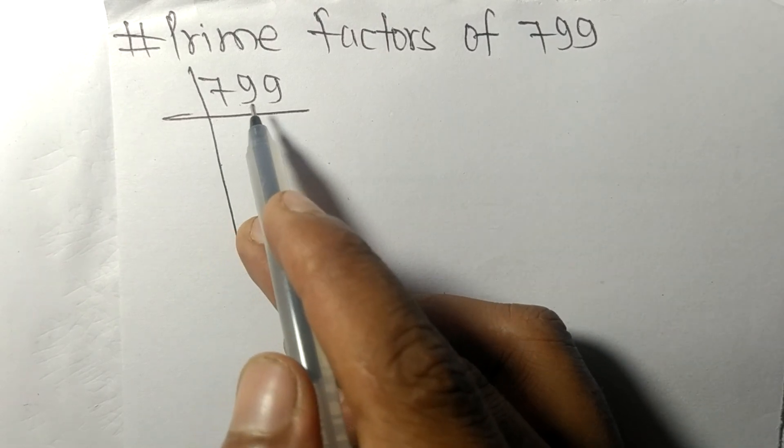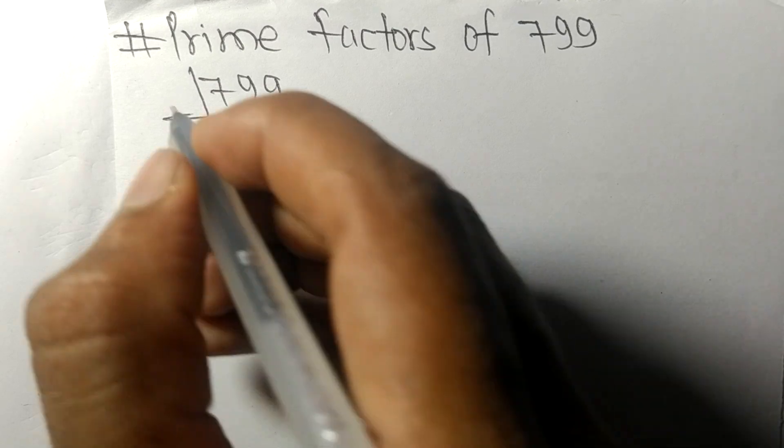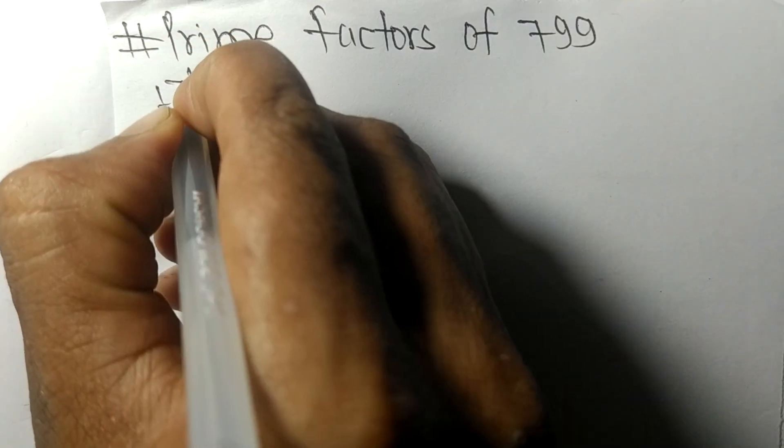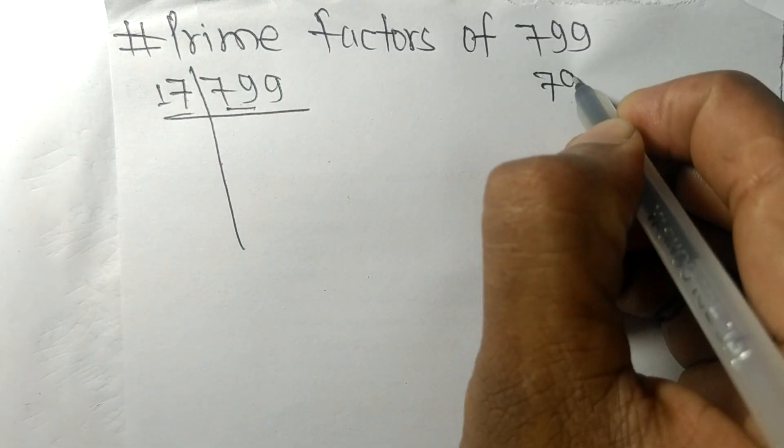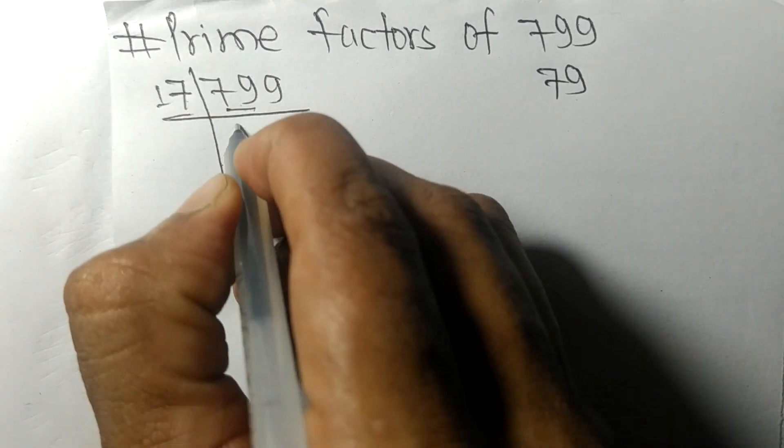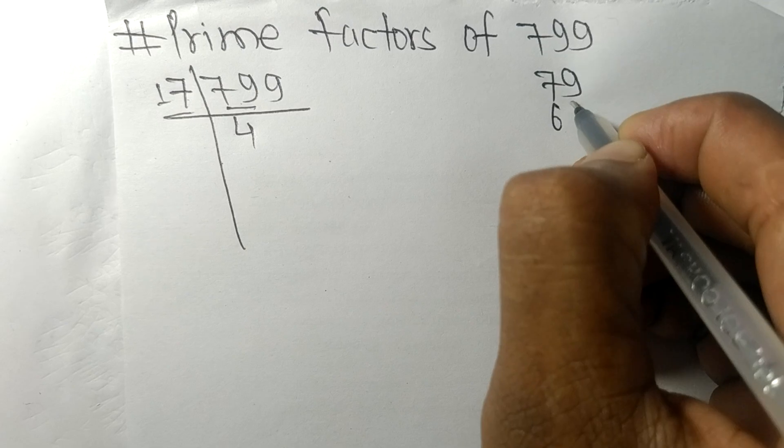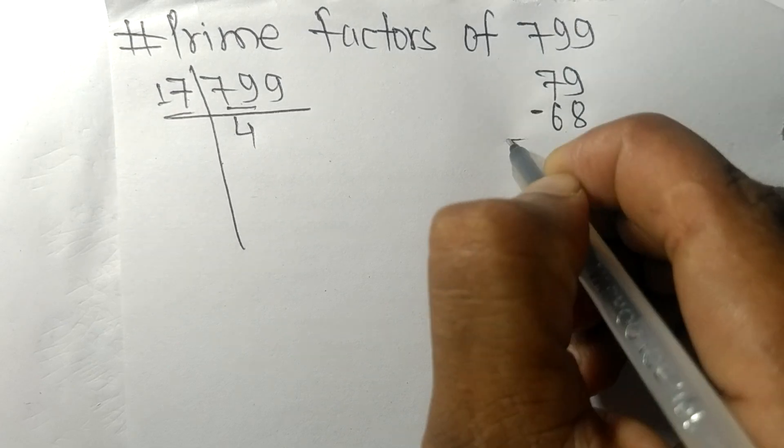So 799 is exactly divisible by 17. First we have 79, so 17 times 4 means 68. On subtracting, 9 minus 8 is 1, 7 minus 6 is 1.